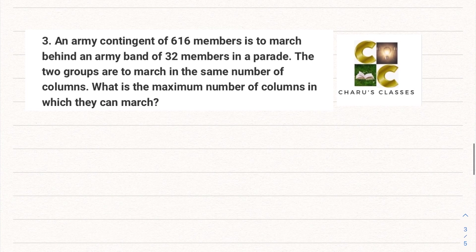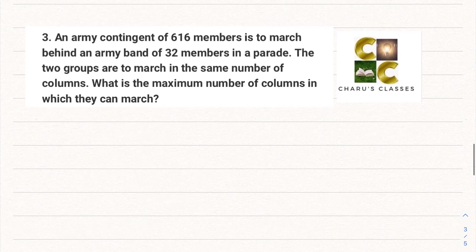Question number 3. An army contingent of 616 members is to march behind an army band of 32 members in a parade. The two groups are to march in the same number of columns. What is the maximum number of columns in which they can march?